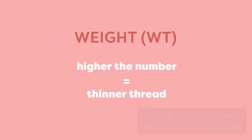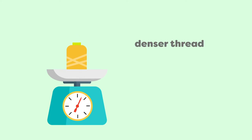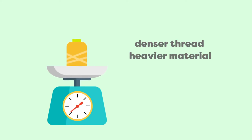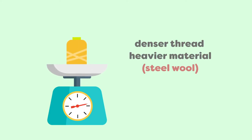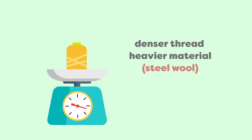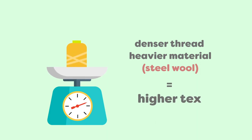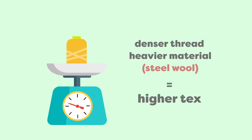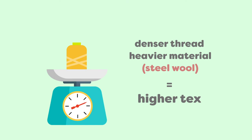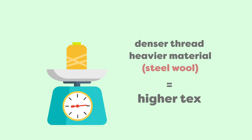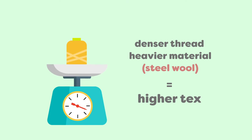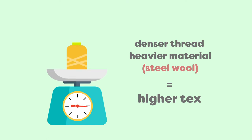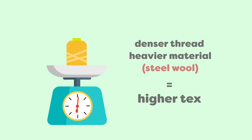However, if you have a denser thread, or the thread is made from a heavier material such as steel wool, you might end up with a higher Tex, despite the strands not being a smaller diameter than a cotton thread with the same Tex. This is why we use thread weight to measure most of our thread lines, with some exceptions.